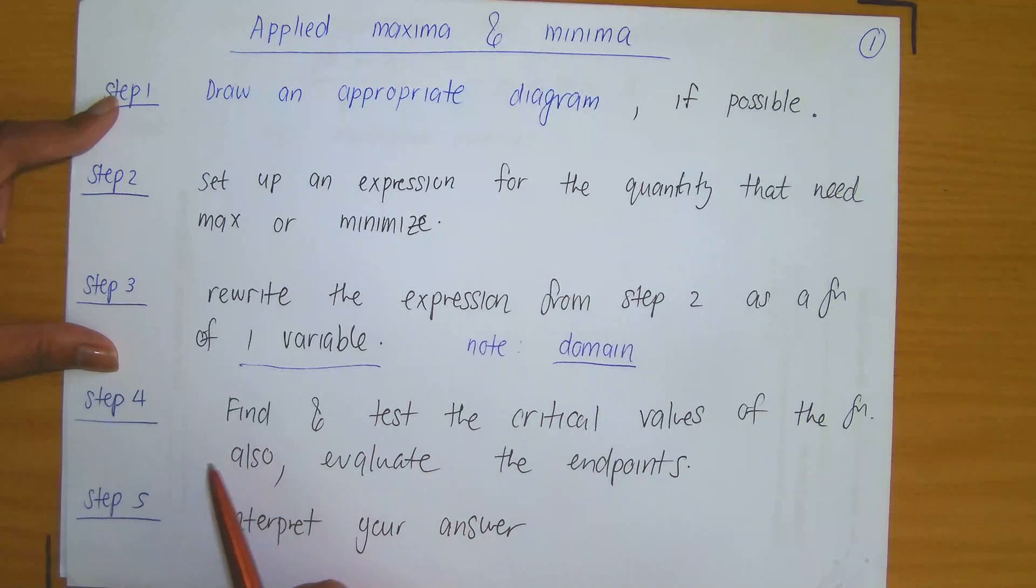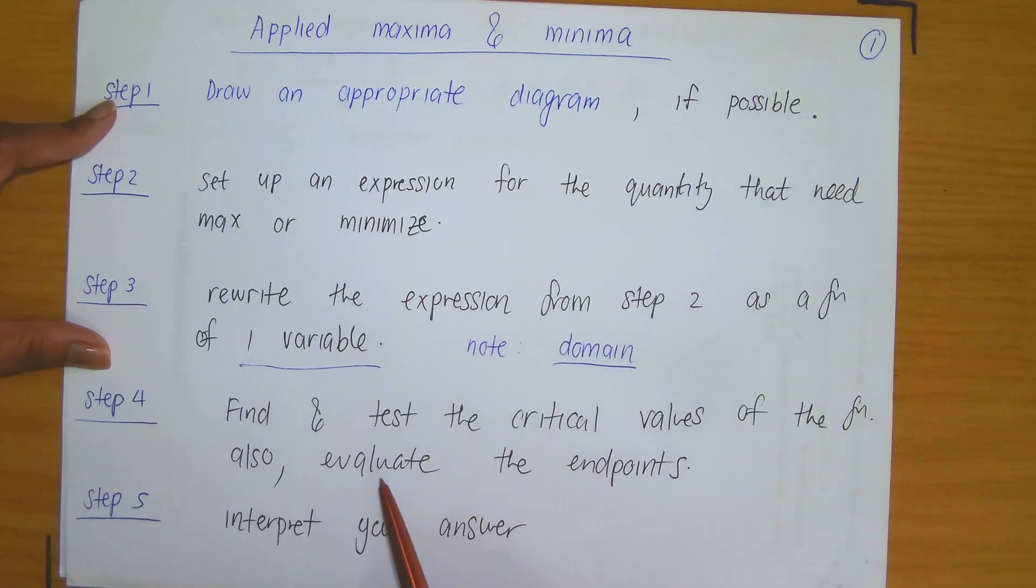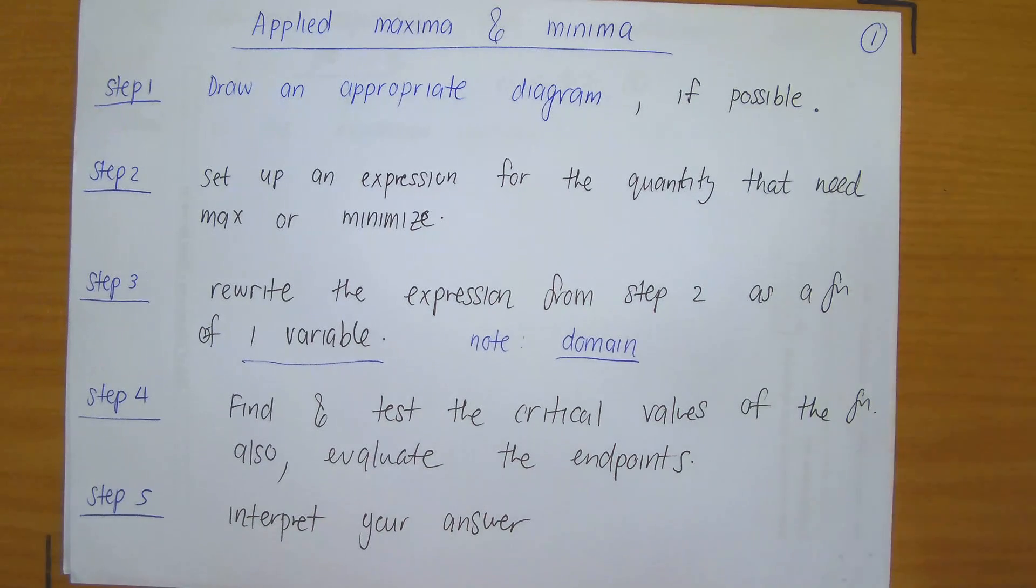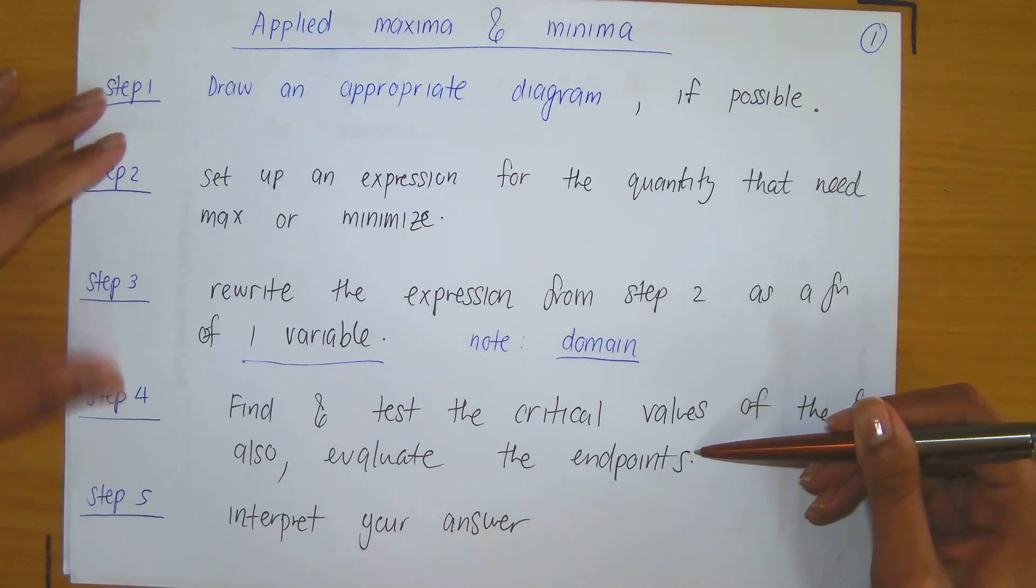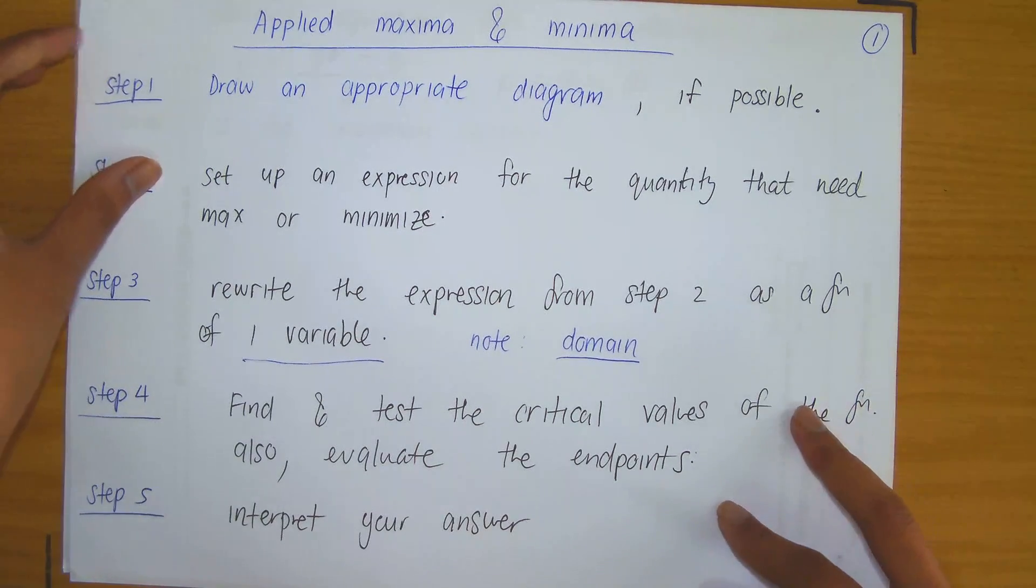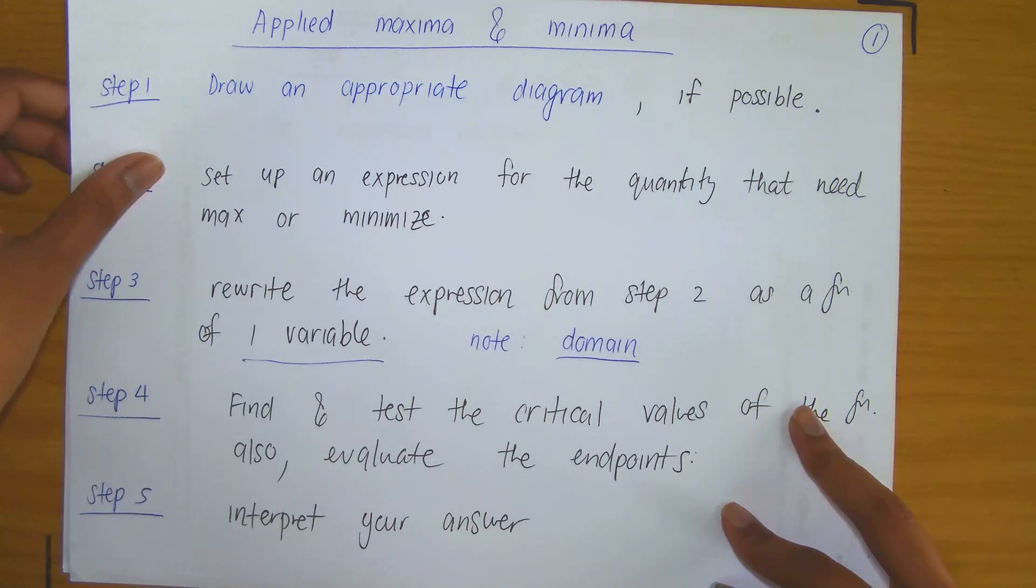Step four, find and test the critical values of the function you obtained in step three. And also do not forget to evaluate the endpoints because remember when we looked at finding extreme values in closed intervals, you were required to evaluate endpoints. And finally, in step five, interpret your answer.